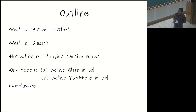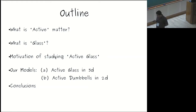Here is the outline of my talk. I will briefly discuss what is active matter, what is glass, and how one can identify what the glass transition is, and what is the motivation of studying active glass, then our models, and I will conclude. I will not go into the detail of the accurate definition of active matter or glass.